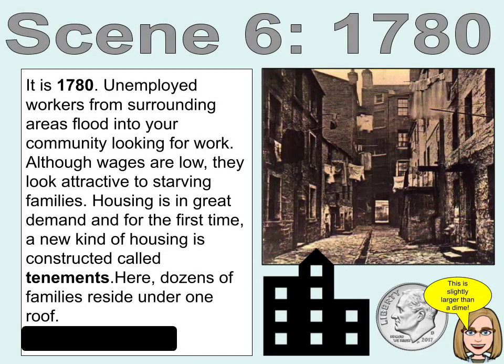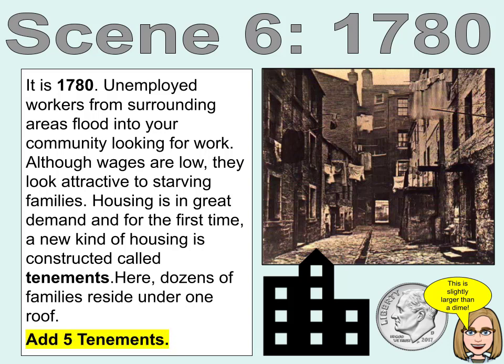Scene 6. It is 1780. Unemployed workers from surrounding areas flood into your community looking for work. Although wages are low, they look attractive to starving families. Housing is in great demand, and for the first time a new kind of housing is constructed called tenements — where dozens of families reside under one roof. Add five tenements.